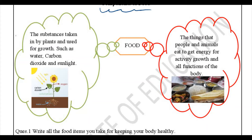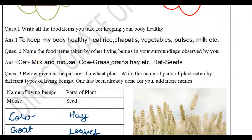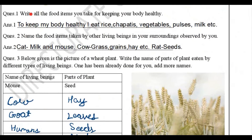These are the substances used in photosynthesis through which plants make their food. Now let's look at Question 1: write all the food items you take for keeping your body healthy. You have to write according to yourself. To keep my body healthy, I eat rice, chapatis, vegetables, pulses, milk, etc.